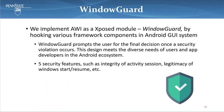WindowGuard will prompt the user for the final decision when a security alert happens. This design is intended to meet the diverse needs of users and app developers in the Android ecosystem. There are five security features provided by WindowGuard, such as activity session integrity as shown in the example, and also legitimacy of window start and resume and other features.